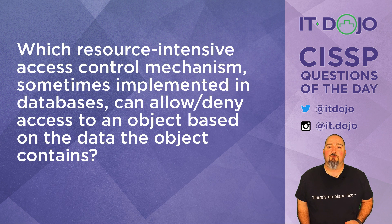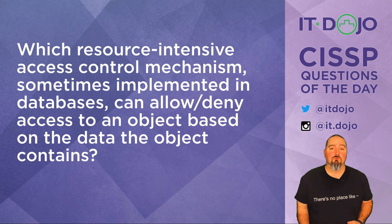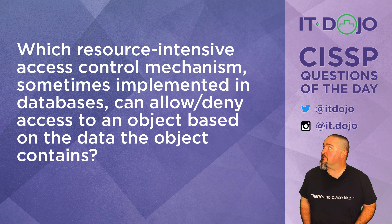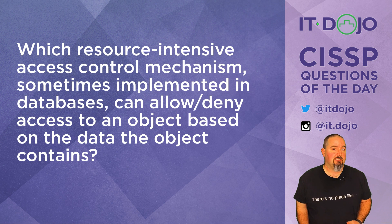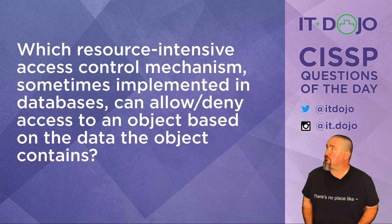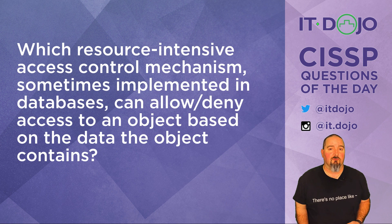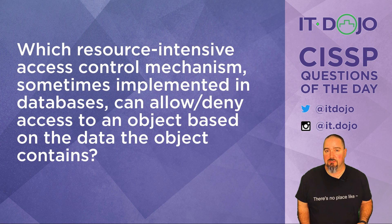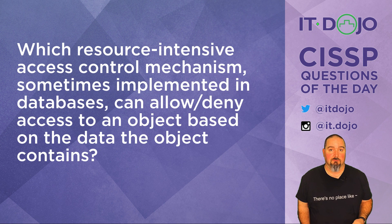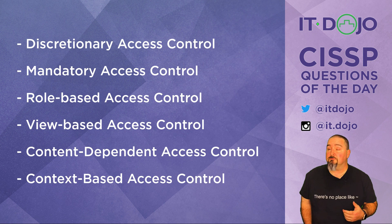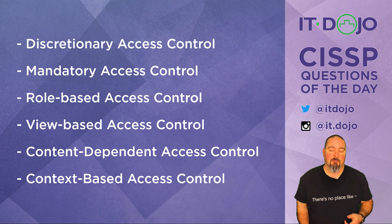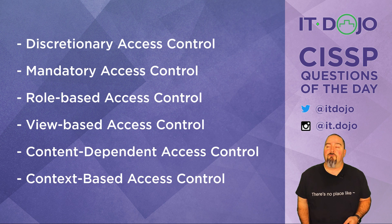First question today: which resource-intensive access control mechanism, which is sometimes implemented in databases, allows for control over access to an object or resource based upon the type of data the resource or object contains? There are your answer choices — look them over, think about it, click pause if you need to. When you're ready, click play and we can break it all down.